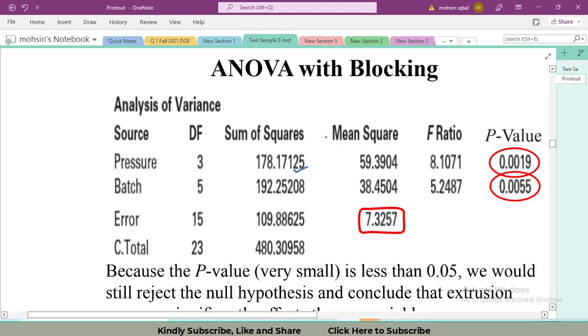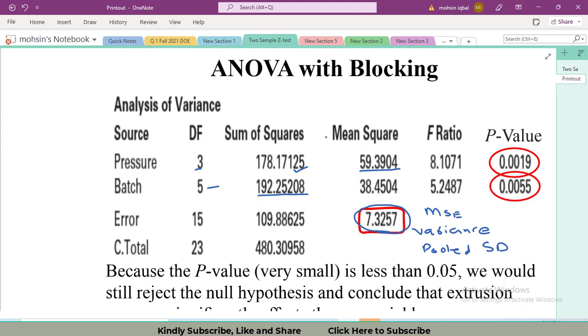When we divide the sum of squares treatment divided by degree of freedom that is 3, we get MS for the extrusion pressure. Likewise when I divide SS batches by their degree of freedom 5, I get 38, and 109 divided by 15 is 7.3. This is the variance or pooled standard deviation. We can also call it MSE, mean square of error.